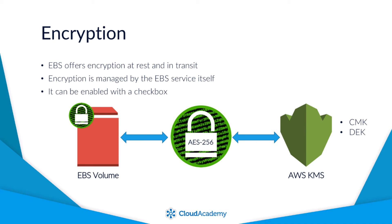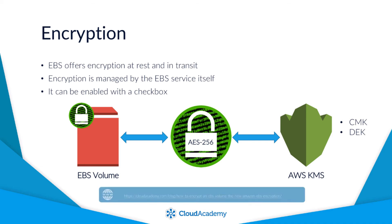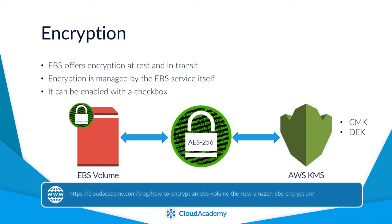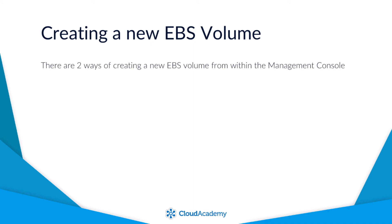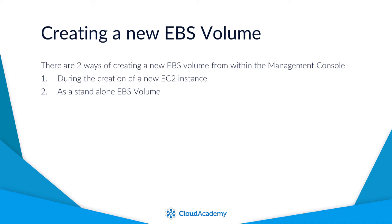You should also be aware that this encryption option is only available on selected instance types. As EBS volumes are separate to EC2 instances, you can create an EBS volume in a couple of different ways from within the management console: during the creation of a new instance and attach it at the time of launch, or from within the EC2 dashboard of the AWS management console as a standalone volume, ready to be attached to an instance when required.